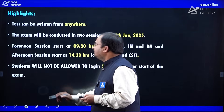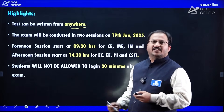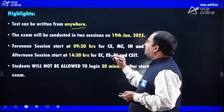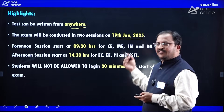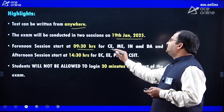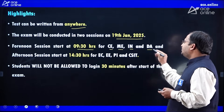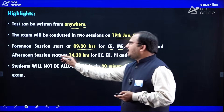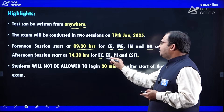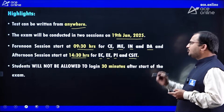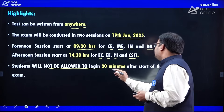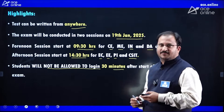Coming to the highlights of this examination: the test can be written from anywhere — sitting at your home you can write this examination. The examination will be conducted in two sessions on 19th January 2025. The forenoon session starts at 9:30 hours for Civil, Mechanical, Instrumentation, Data Science and AI papers, and the afternoon session starts at 14:30 hours for Electronics and Communication, Electrical Engineering, Production and Industrial Engineering, and Computer Science and IT. Students will not be allowed to log in 30 minutes after the start of the examination.